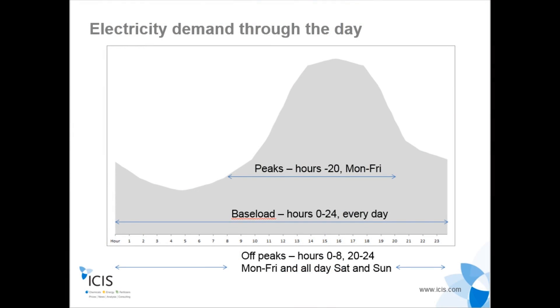First of all, we'll talk very briefly about the demand curve. A typical demand curve — this is a very crude, basic demand curve — shows that demand for electricity and energy in general is very low during the early hours of the morning when people are sleeping. As people wake up and leave for work, demand starts to pick up. We have what's called peak demand through the middle of the day, and then people leave work and go home, which is when we get our real demand spikes.